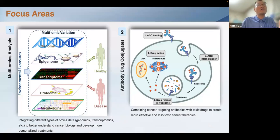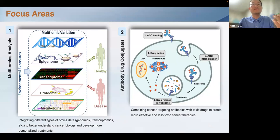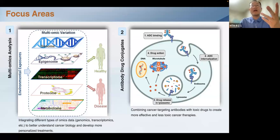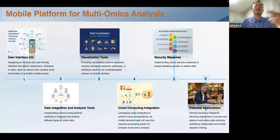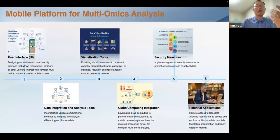From now on, I would like to introduce two fields of my research. One is multi-omics analysis and mobile platform — the core of precision medicine. The other is antibody drug conjugates. Multi-omics analysis is the integrated study of multiple omics layers for a more comprehensive and holistic understanding of biological systems. We are developing multi-omics analysis tools and developing mobile usable platforms.